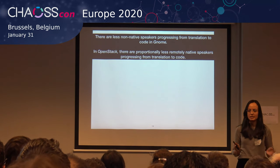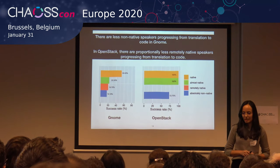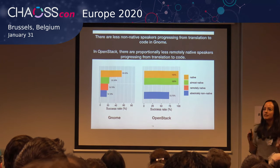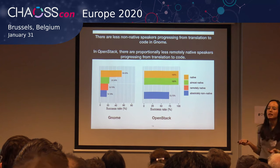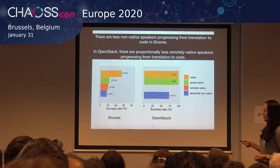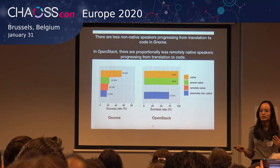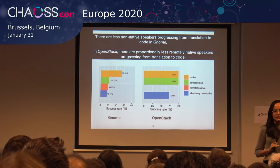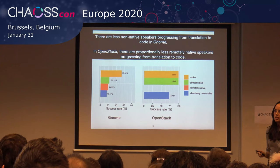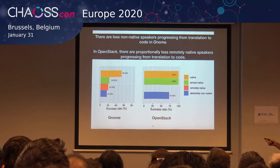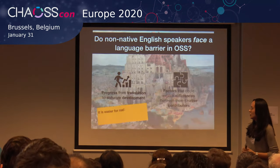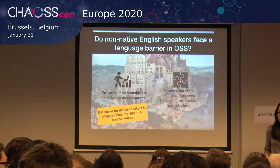We wanted to calculate the success rate of someone going from translation to source code. The success rate is calculated by taking the number of contributors who did translation and code changes in a category and dividing by the total number of contributors in that category. For GNOME, native English speakers have more than 50%, which is the threshold we defined to see if it's easier or difficult to change source code. Apparently for non-native English speakers, it's hard to go from translation to source code. As a result, we found that it is easier for native English speakers to go from translation to source code.